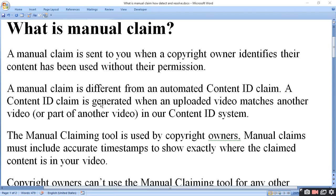What is a manual claim? A manual claim is sent to you when a copyright owner identifies their content has been used without their permission. When you use the content without permission, a claim can be given manually. A manual claim is different from an automated Content ID claim.